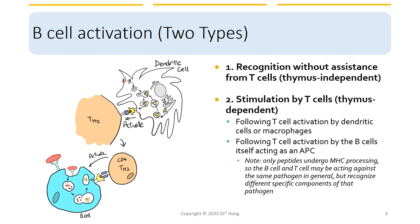A recap from last lecture: we have T cell activations by dendritic cells or macrophages serving as antigen-presenting cells. It synapses on the TH0 cells, and it can differentiate into either TH1 or TH2. In the TH2 pathway, B cells themselves can serve as antigen-presenting cells and synapse on TH2. Through this pathway, B cells can be activated. Note that when MHC class 1 or 2 processes antigens, only peptides undergo that processing — so B cells and T cells may be acting against the same pathogen but recognizing very different specific components.